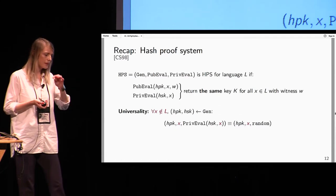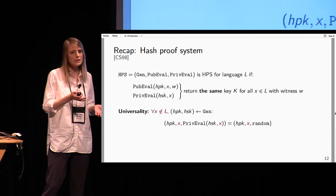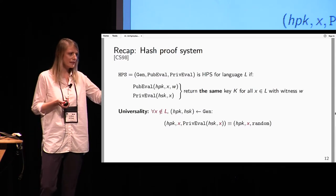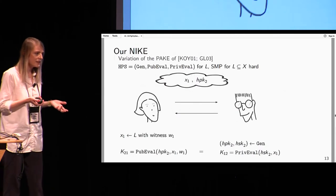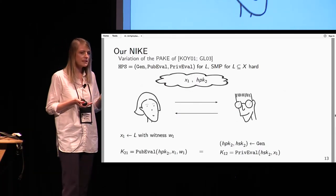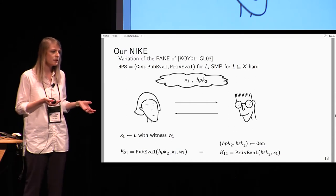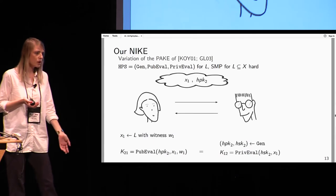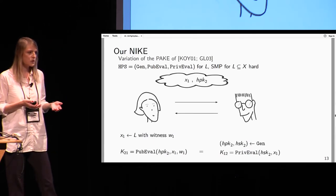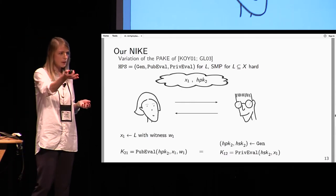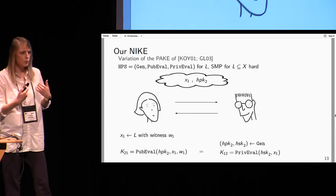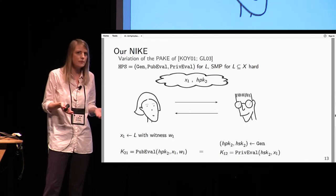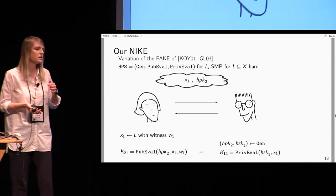Whenever the word is in the language, we want that public evaluation and private evaluation yield the same key — that's correctness. Further, we want universality: whenever we're outside the language, even given the public key corresponding to the secret key, private evaluation of the secret key on a word outside the language should look completely random. This is exactly what we needed. So in our NIKE, Alice chooses a word from the language together with a witness, and Bob chooses a hash proof system public key and secret key. They both derive a shared key: Alice uses Bob's HPS public key with her own word and witness; Bob evaluates privately using his HPS secret key and Alice's word, which is Alice's public key.